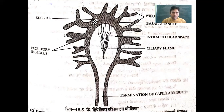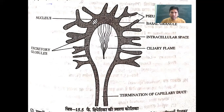From the mesenchyme, these pseudopodia collect the excretory substances — the waste materials — and deposit them into the cytoplasm of this cell. That is, the pseudopodia found around the flame cells collect excretory substances from the surrounding mesenchyme and then transfer those excretory substances into the cytoplasm.